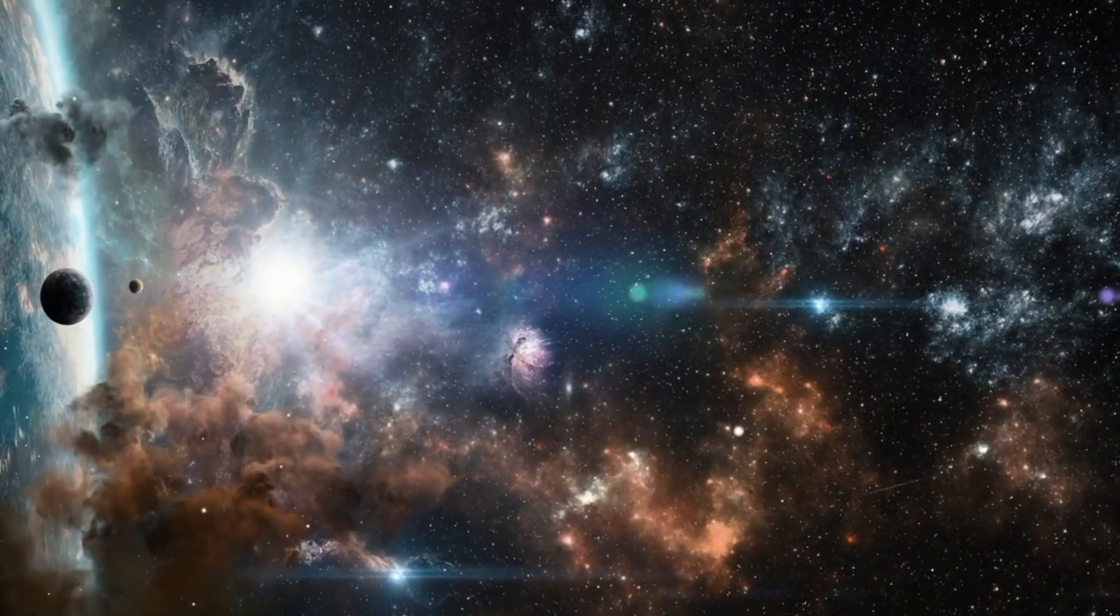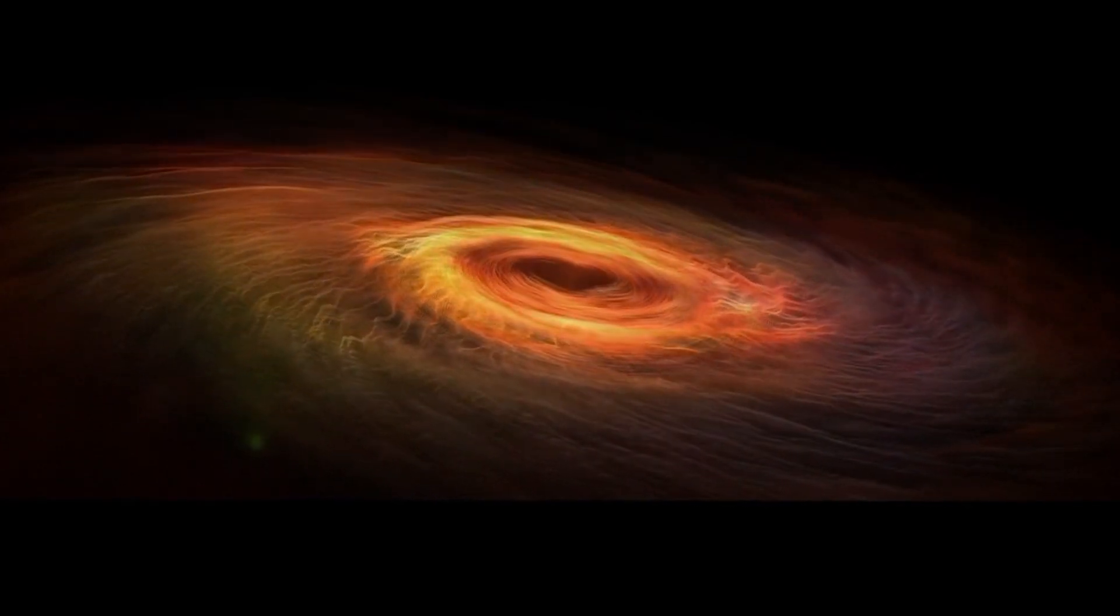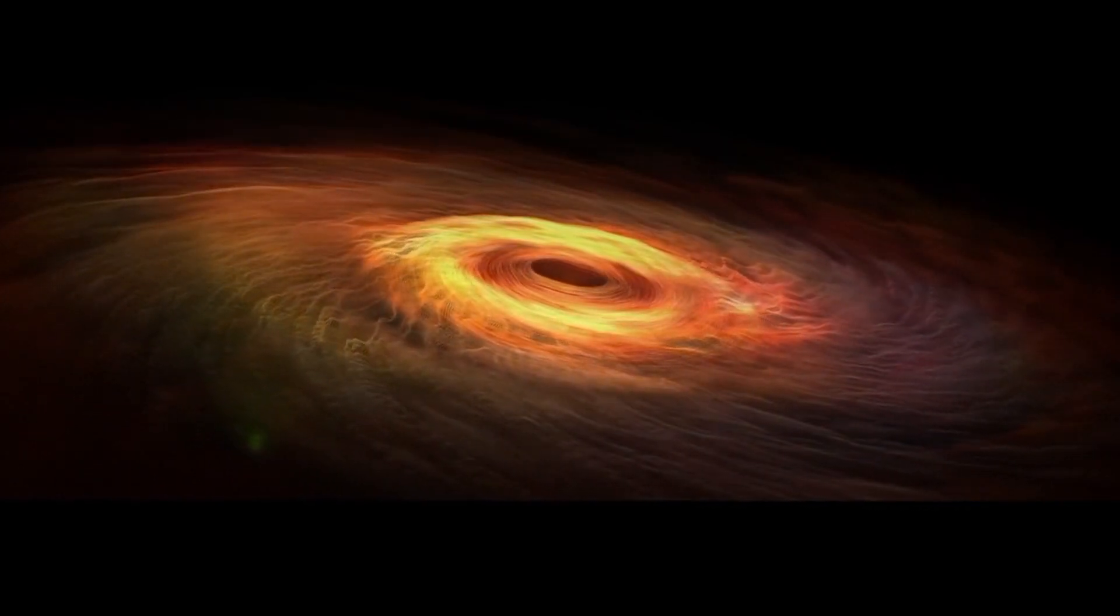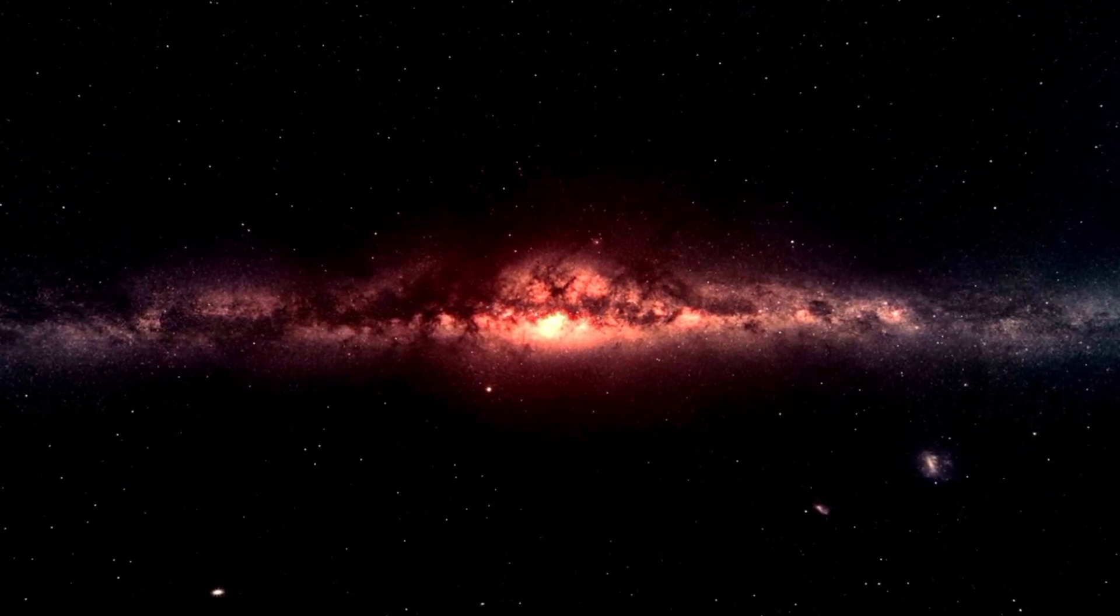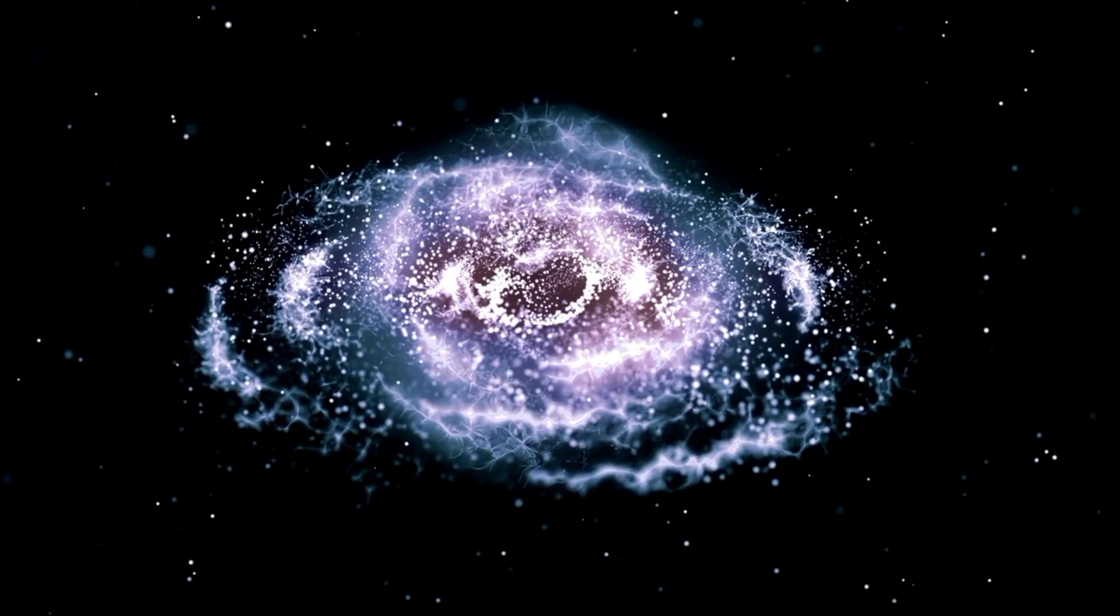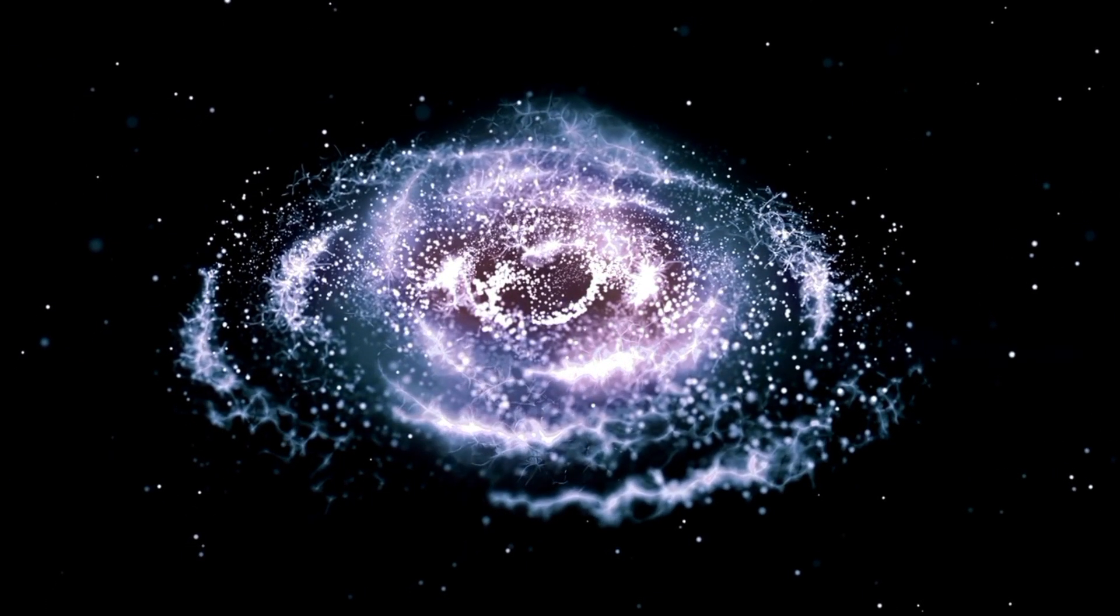This information helps us better understand the vastness of our universe and the staggering distances between celestial bodies. Betelgeuse is only about 10 million years old, while the Sun is 4.6 billion years old. Despite being significantly younger, Betelgeuse is a fully developed star.